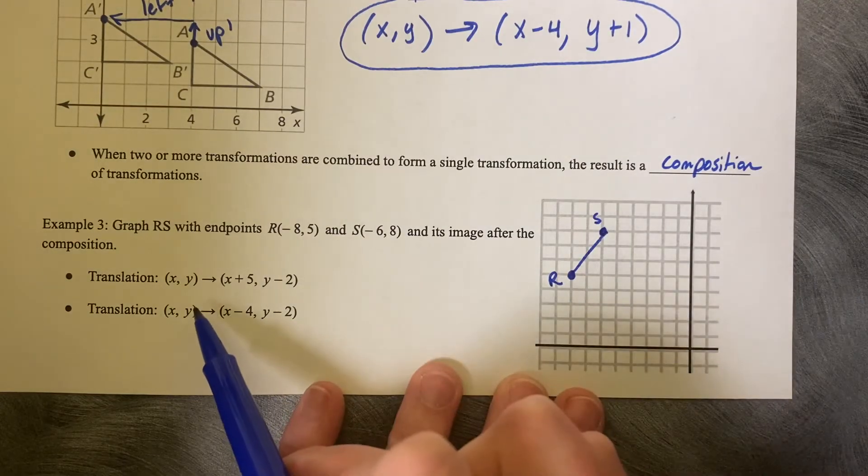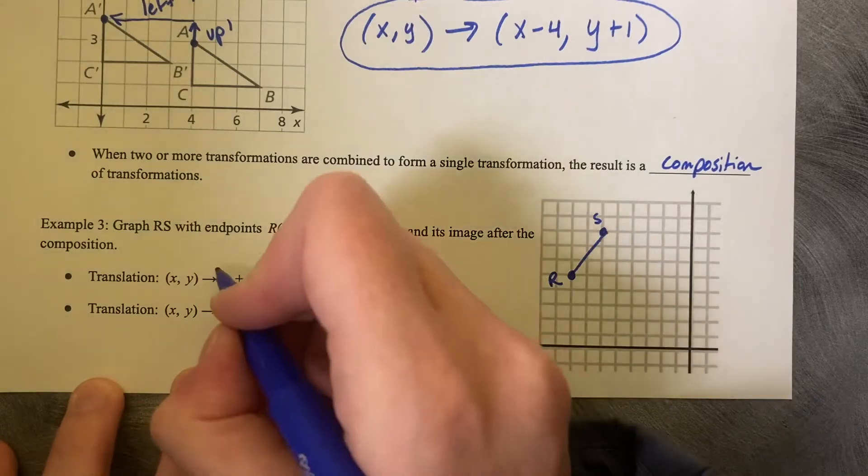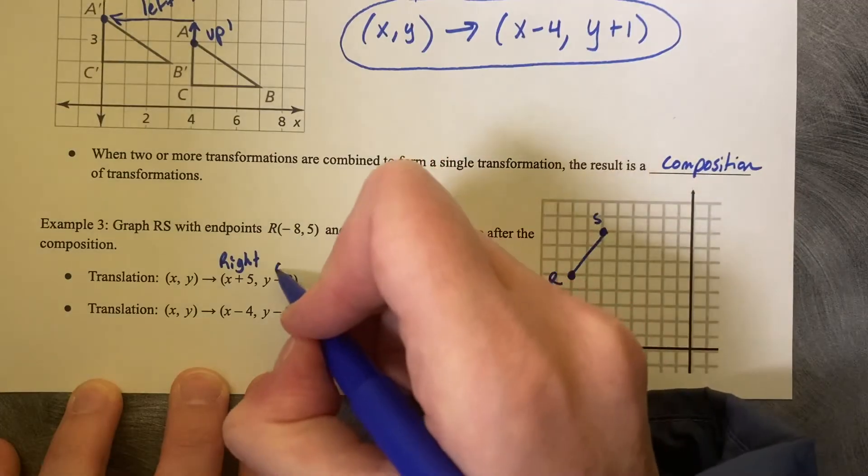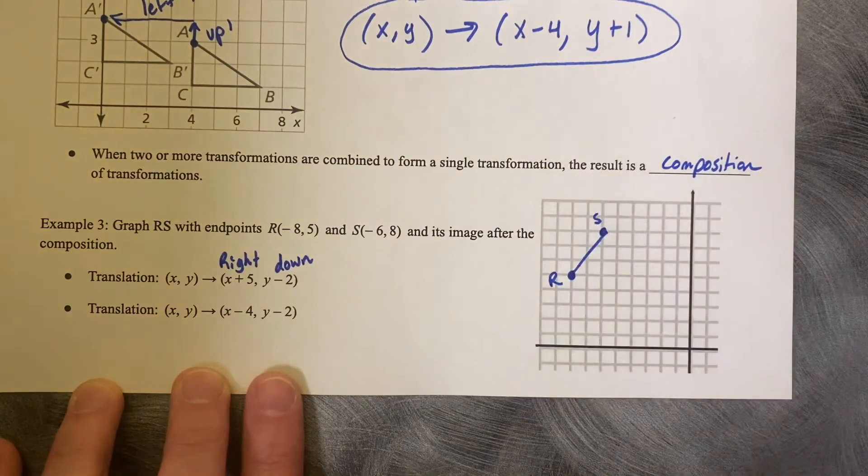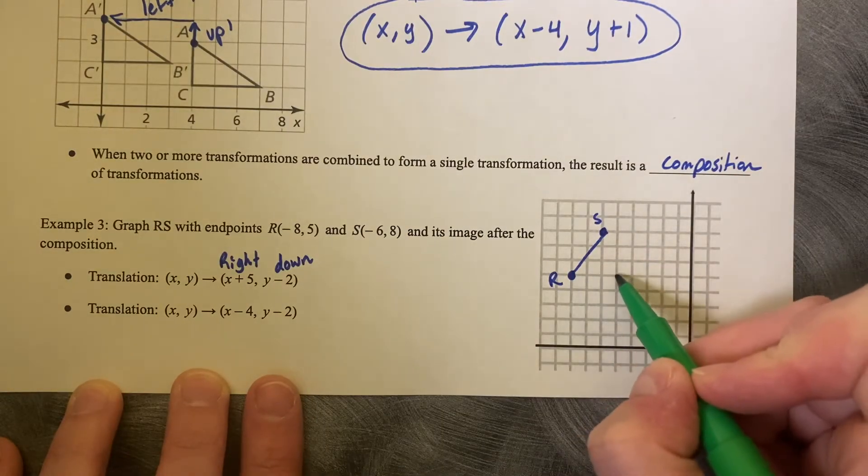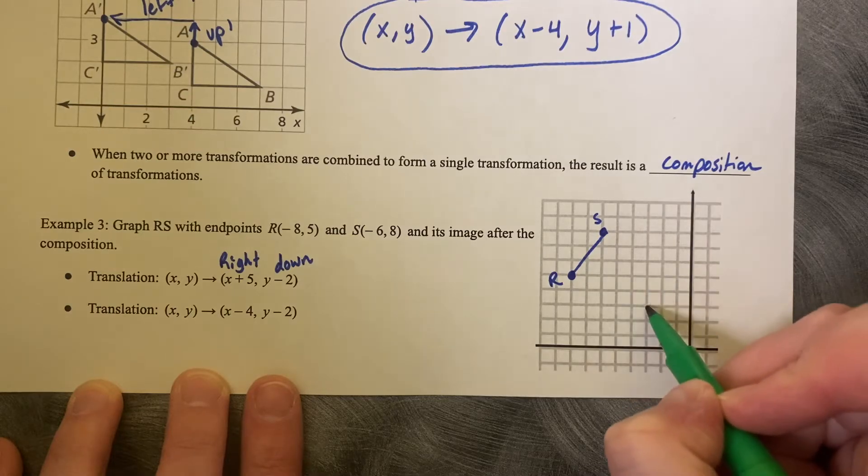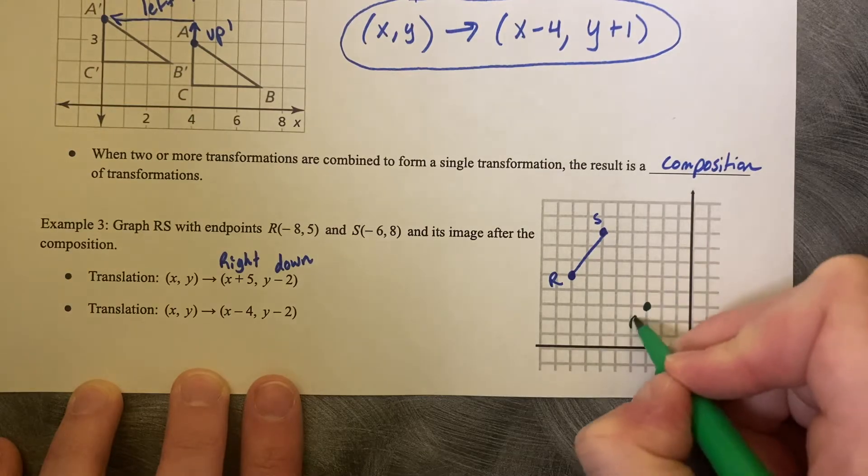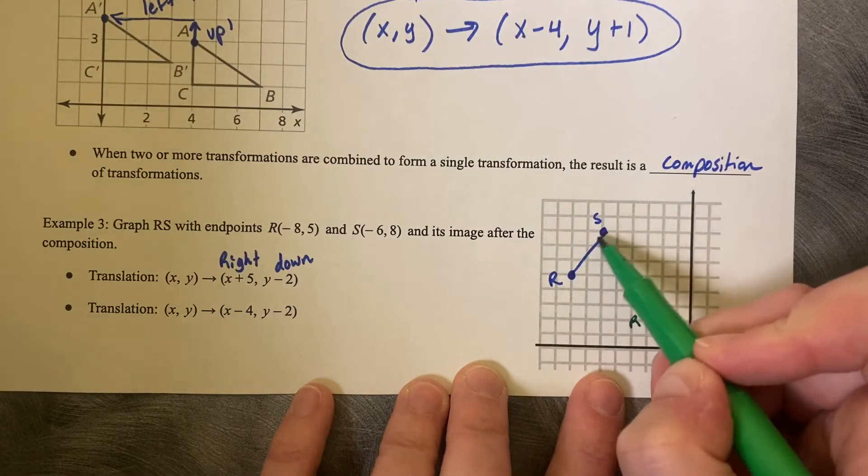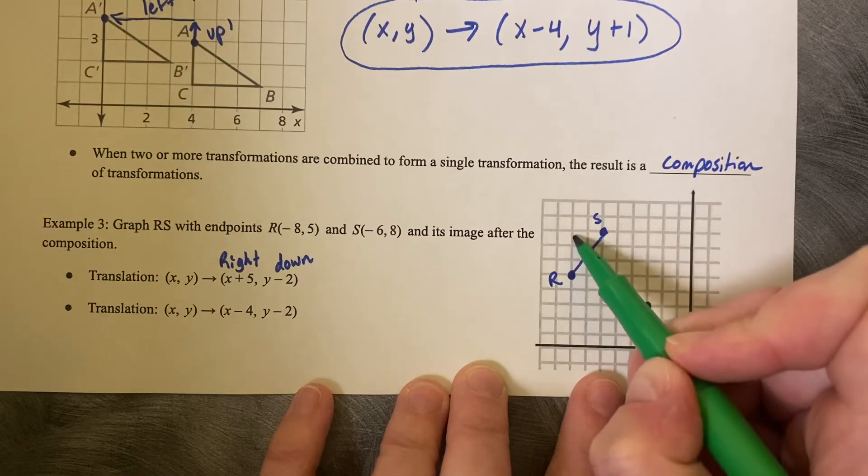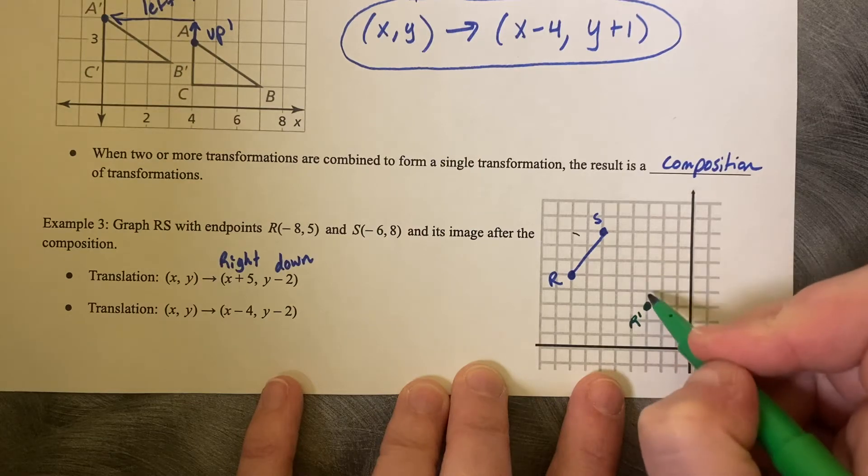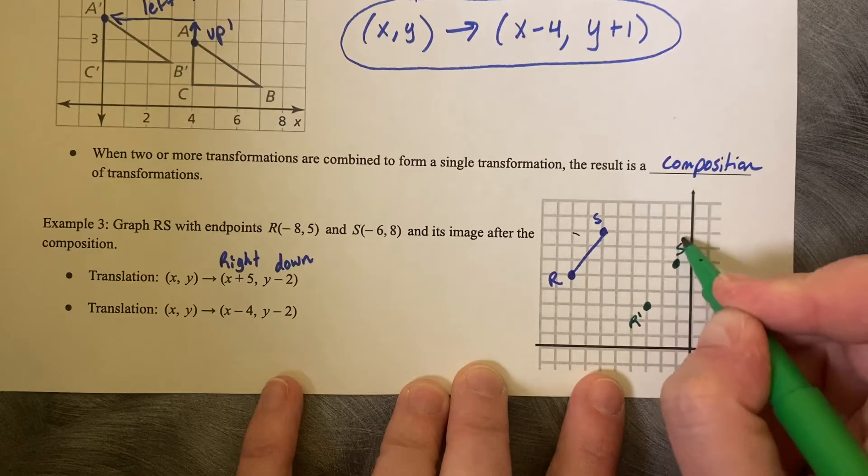The first translation that we would like to do is X plus 5, so that's right 5, and Y minus 2 is down 2. So let's just do it using the graph. Right 5: 1, 2, 3, 4, 5, and down 2. So this is going to be R prime. You can also just use your slope of this line to get your S prime. So if I go from R, I can go up 3 and right 2. So I can do the same thing from R prime: up 3 and right 2 to get S prime.